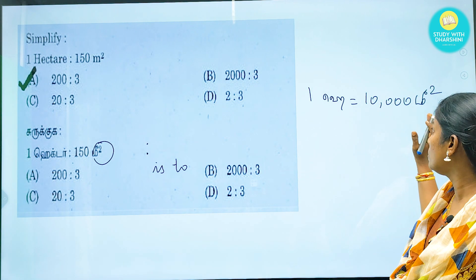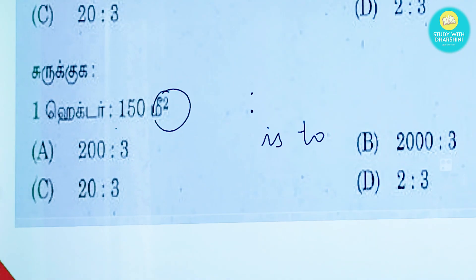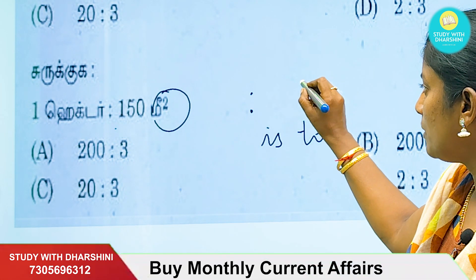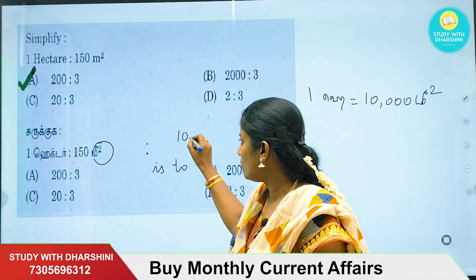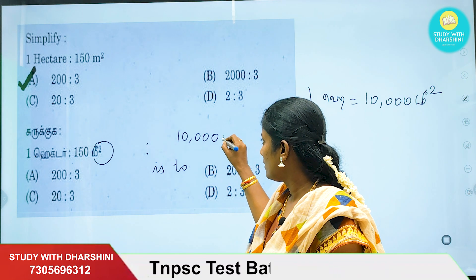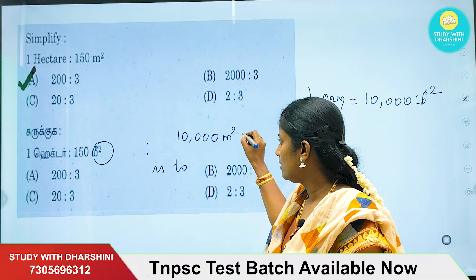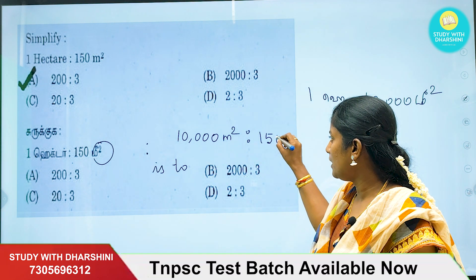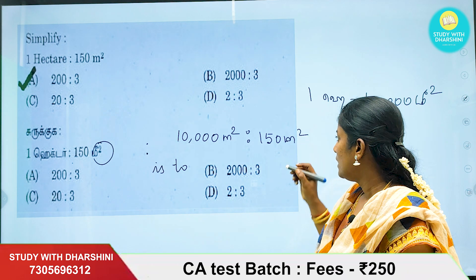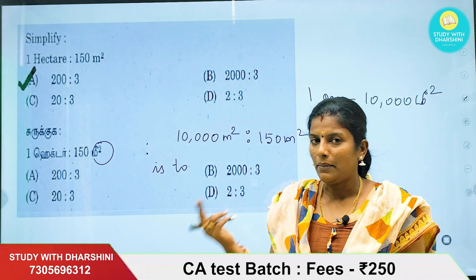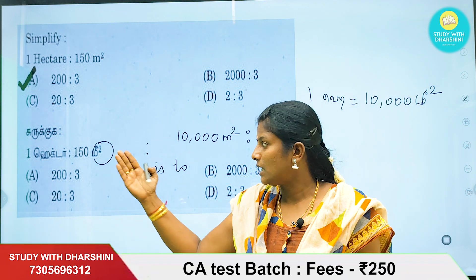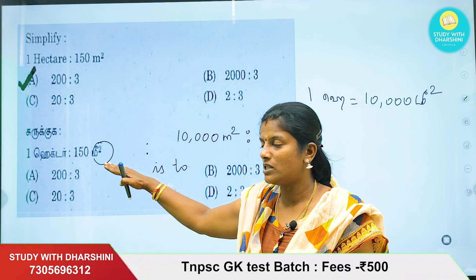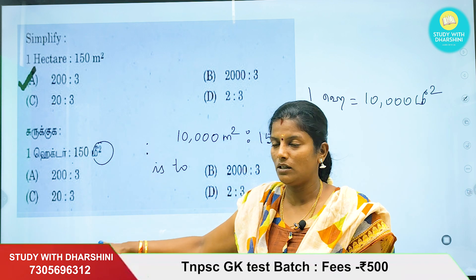So, 1 hectare equals 10,000 meters square. Now we can compare the two values using the same units. This is the first conversion, then we take the simplification.